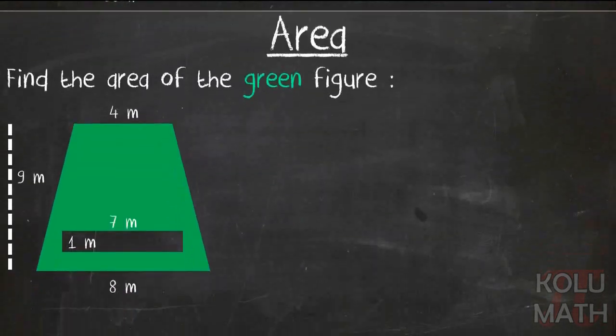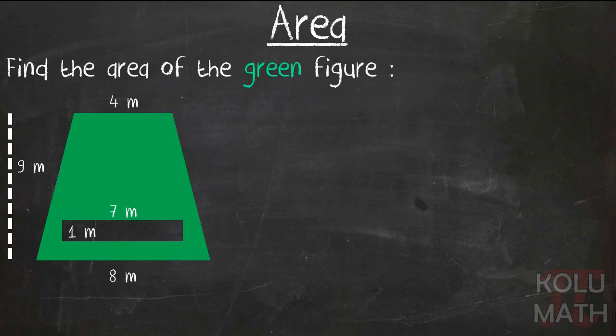Add them up and we get a total area of 680 inches squared. Let's take a look at another one. All right. Find the area of the green figure.